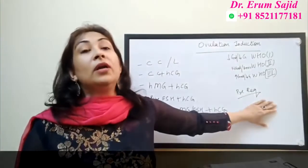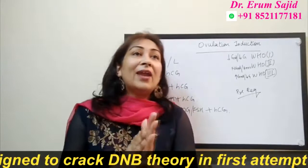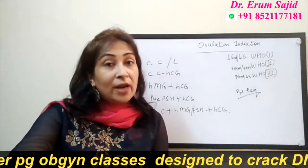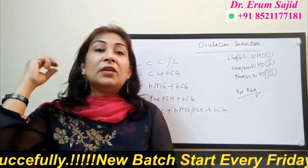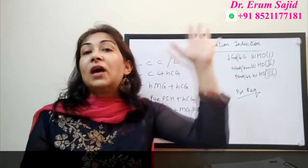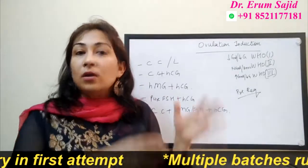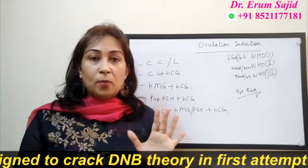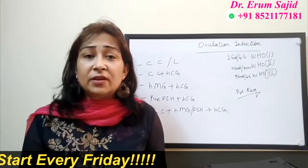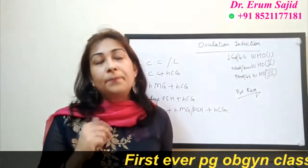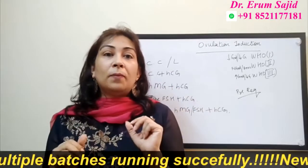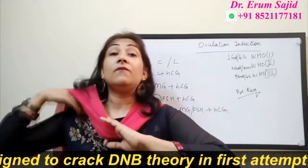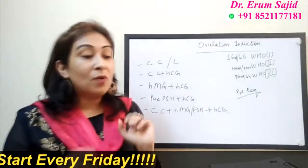Before taking up ovulation induction, let me give a brief description of anovulatory disorders. They are divided into WHO categories 1, 2, and 3. WHO category 1 is hypogonadotropic hypogonadism — something is wrong with the hypothalamic-pituitary-ovarian axis. WHO category 2 is normal gonadotropins but anovulation — everything seems right but there is still a problem; PCOS falls here. WHO category 3 is hypergonadotropic hypogonadism — something is wrong with the ovary itself, either resistant ovary or premature ovarian failure.